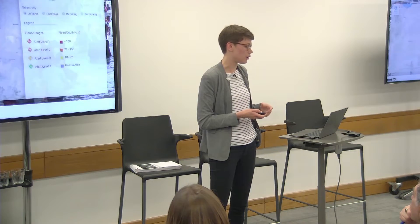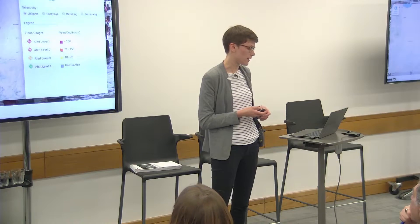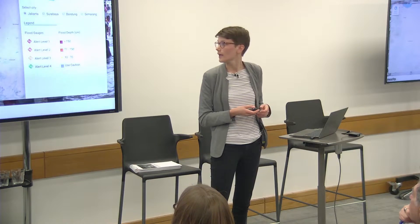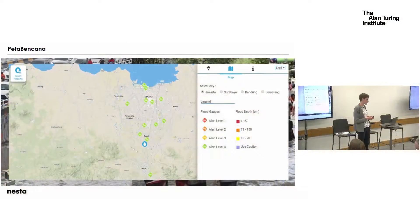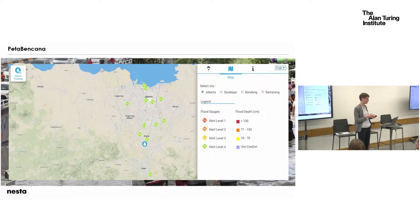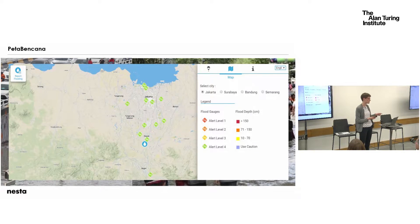Here's an overview of the platform. This is a screenshot from their map. You can see a lot of red here, which means alert level four — just use caution, it's not too dangerous. Essentially this map updates all the time once people submit new reports.